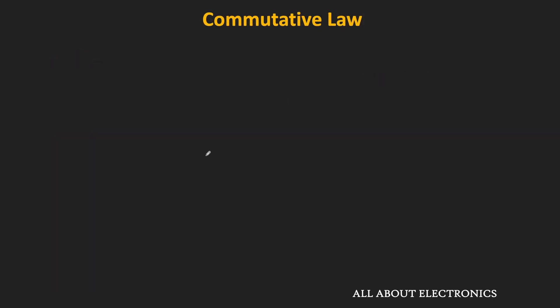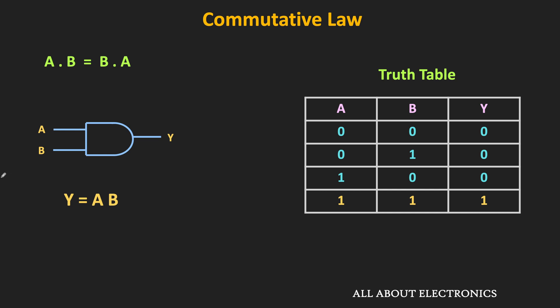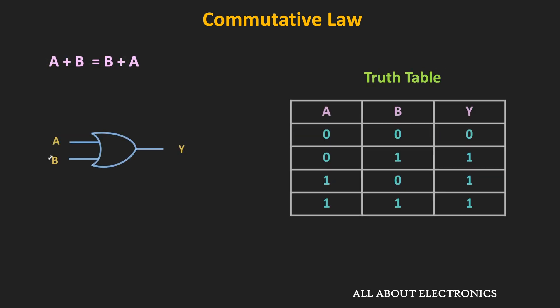The next is the commutative law, which says that the order in which the inputs are connected to the AND gate doesn't matter. For example, if we connect input b at the top and a at the bottom, we will get the same result — meaning a·b is the same as b·a. The same is true for the OR gate: if b is connected at the top and a at the bottom, the output remains the same.